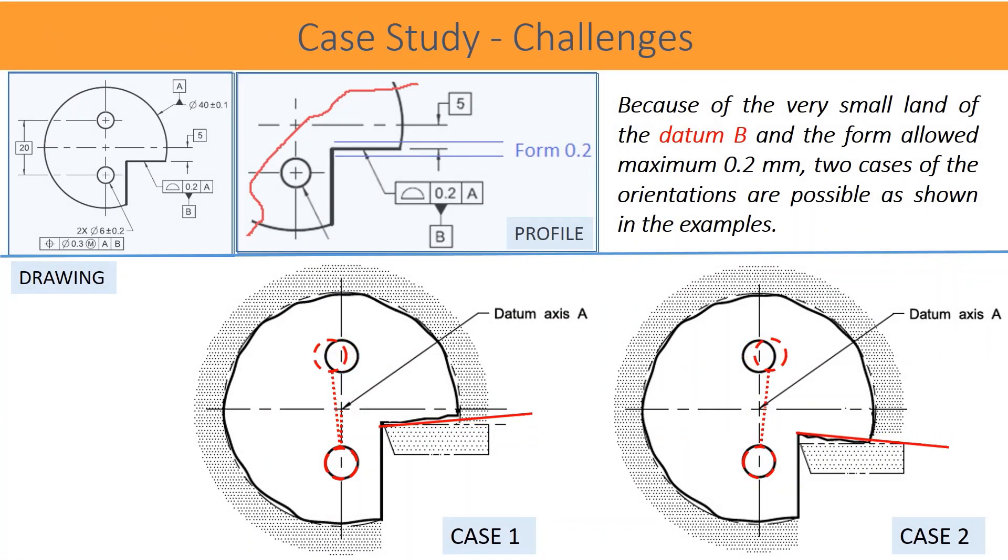Because of the very small land of the datum feature B and the form allowed maximum 0.2 mm, two cases of the orientations are possible as shown in the examples. In the examples, orientations are shown to their worst case of the manufacturing.